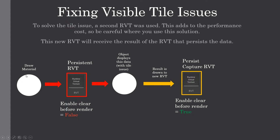So we have a shape that we want to draw with a draw material. It will draw to the persistent Runtime Virtual Texture, which has 'Enable Clear Before Render' set to false. Then an object will display this data — but as we've seen, it will have tile issues. That output will then get drawn to this new Runtime Virtual Texture, which has 'Enable Clear Before Render' set to true.